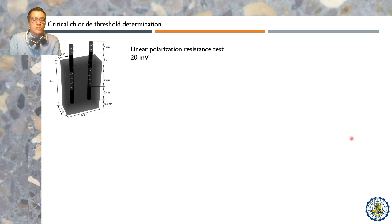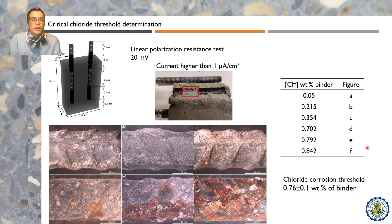Rebar-reinforced samples were then prepared to determine the chloride threshold via monitoring current density values obtained by linear polarization resistance. Once the current density reached a value of 1 micron per centimeter squared, the rebar was extracted and the chloride concentration at the interface was measured. The optical microscopies with the associated chloride concentration are presented in the figure. The critical chloride concentration threshold was found to be 0.76 weight percent of binder, which is higher than ordinary Portland cement and is useful to predict the service lifetime of the structure.